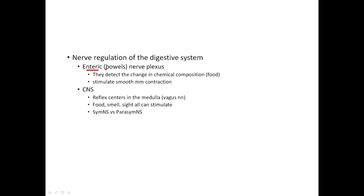The enteric nerve plexus — which means the bowel nerve plexus — detects changes in chemical composition. Food has chemistry to it, and your body picks up on that, triggering digestion. Smooth muscle contractions help break down food and move it along. The central nervous system and reflex centers are controlled by cranial nerve 10, the vagus nerve. Stimulation from the sight, presence, or smell of food triggers your body to prepare for digestion.